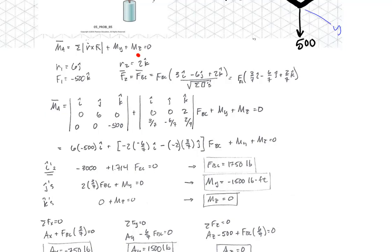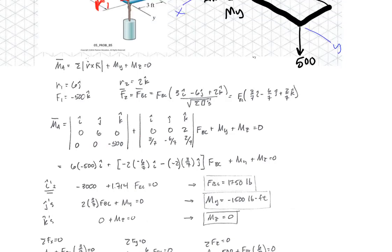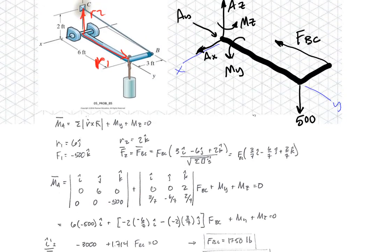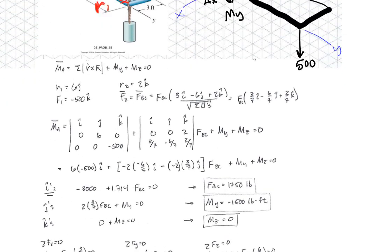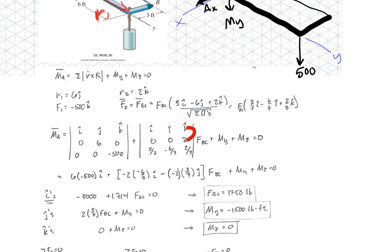So the moment about A. Here I have the first one, 6J and negative 500K. Do that cross product. Plus the other one, which is this one here, R2 times that vector. So here my R2 is 2K. Here's my unit vector, and then I factored out the unknown, F_BC. In this case, I have to add the two moment reactions, the moment in the Y, moment in the Z.